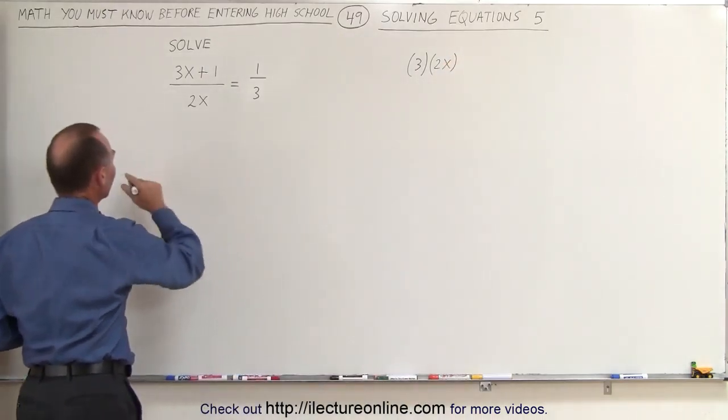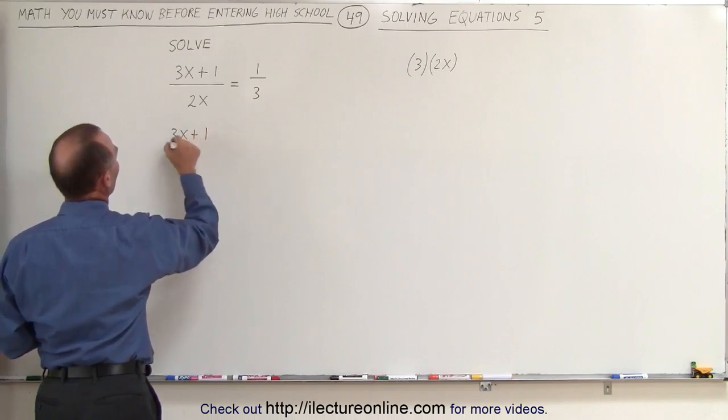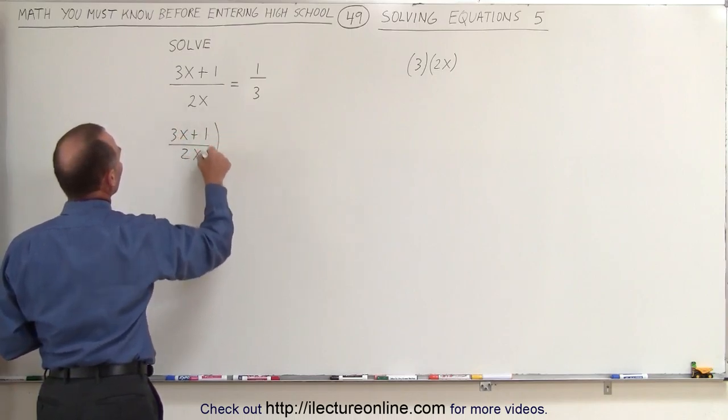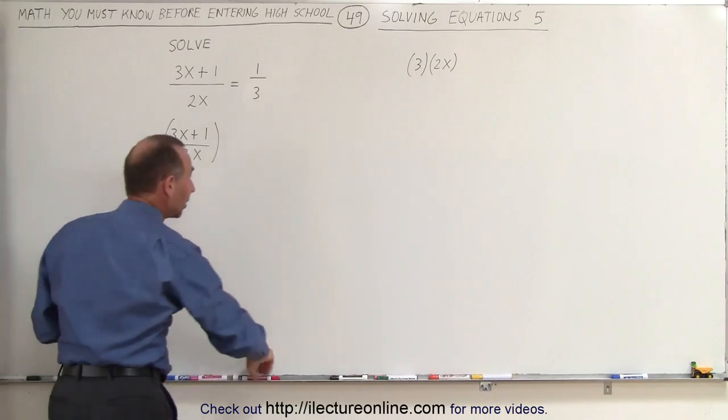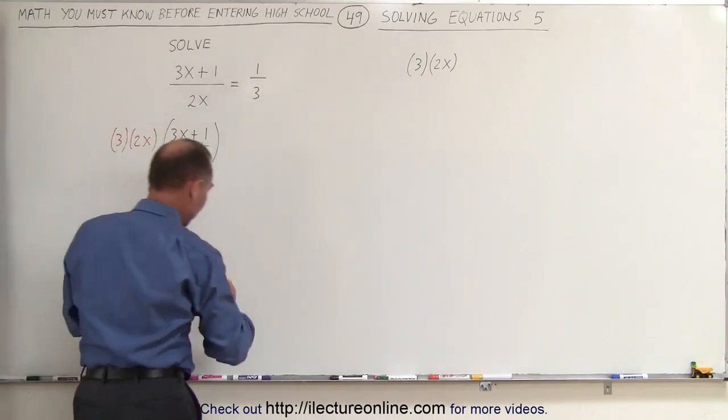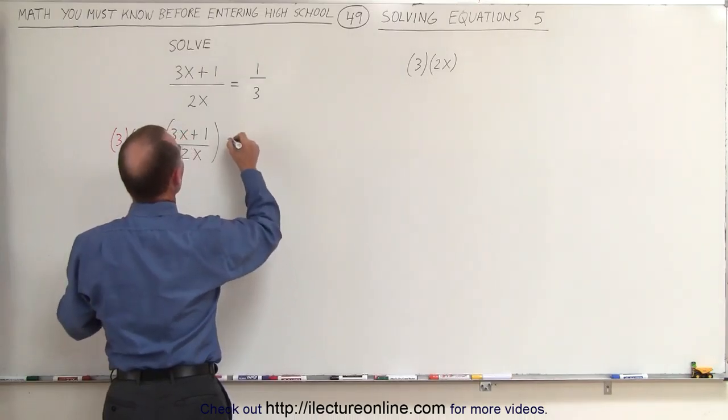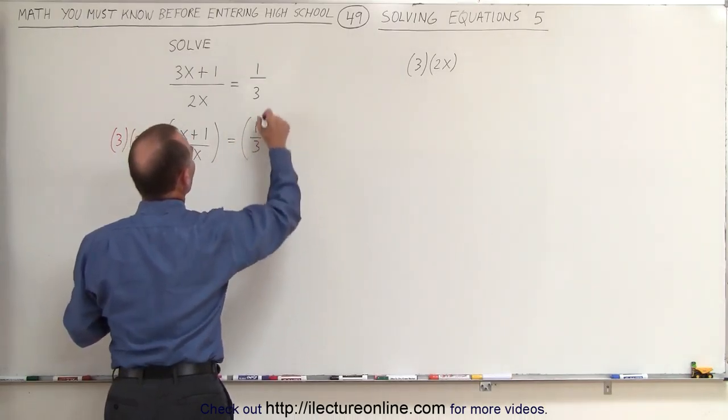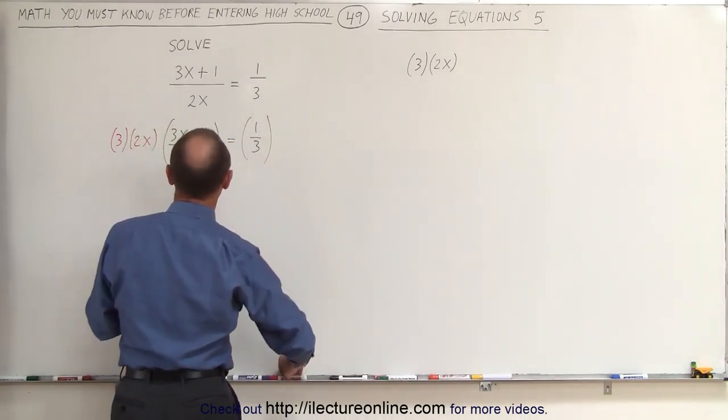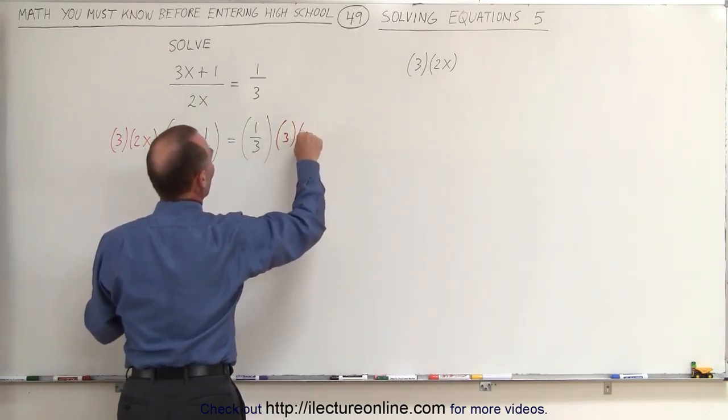And see what we get. So on the left side, we're going to write 3x plus 1 over 2x, and we're going to multiply that times 3 times 2x. And of course, when we do that to the left side, we have to do exactly the same to the right side. So this becomes 1 third, and we're going to multiply that as well by 3 and 2x.